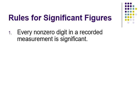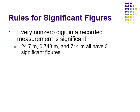So what are the rules for significant digits? Every number that is not a zero is a significant digit — that makes things easy from the start. Everything that's not a zero is automatically significant. For instance, 24.7, 0.743, and 714 would all have three significant figures because each has three numbers that are not zero. The last significant digit is the estimate.